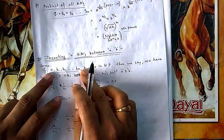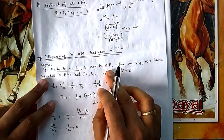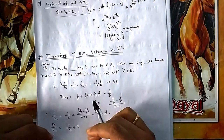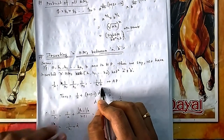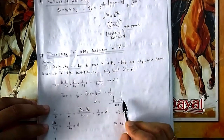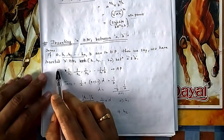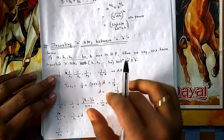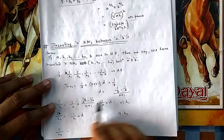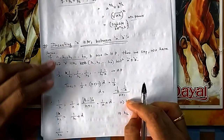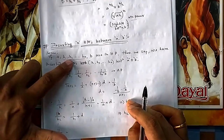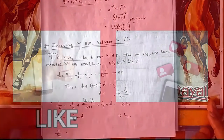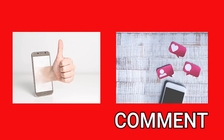Similarly for HM. If h1, h2, ..., hn are inserted between a and b such that a, h1, h2, ..., hn, b forms an HP, then those are the HMs. To calculate, convert the HP to an AP by taking reciprocals. Find d for that AP using the last term formula (n+2 terms, last term 1/b). Once you have d, 1/h1 = 1/a + d, then reverse to get h1, h2, and all the HMs.